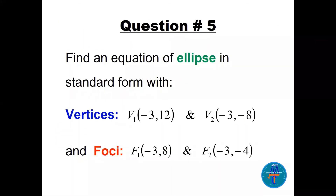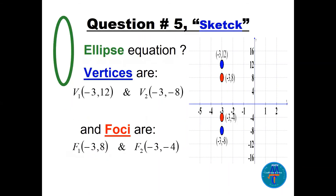Question 5: find the equation of an ellipse in standard form, given vertices V1(−3, 12) and V2(−3, −8), and foci F1 and F2. I recommend a quick sketch first to determine the type. Pause and think: is the major axis vertical or horizontal? A sketch will reveal the answer before you start solving.